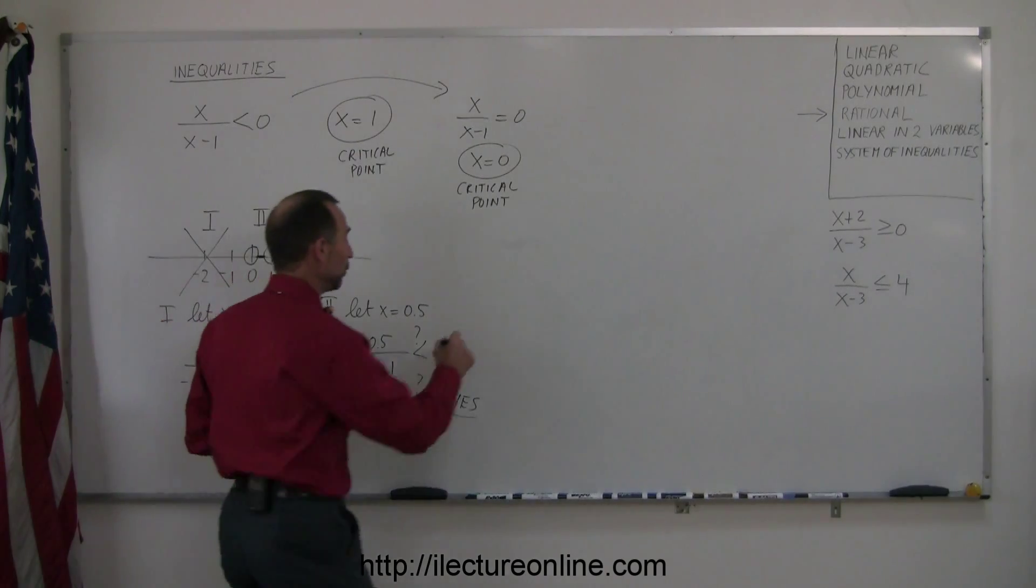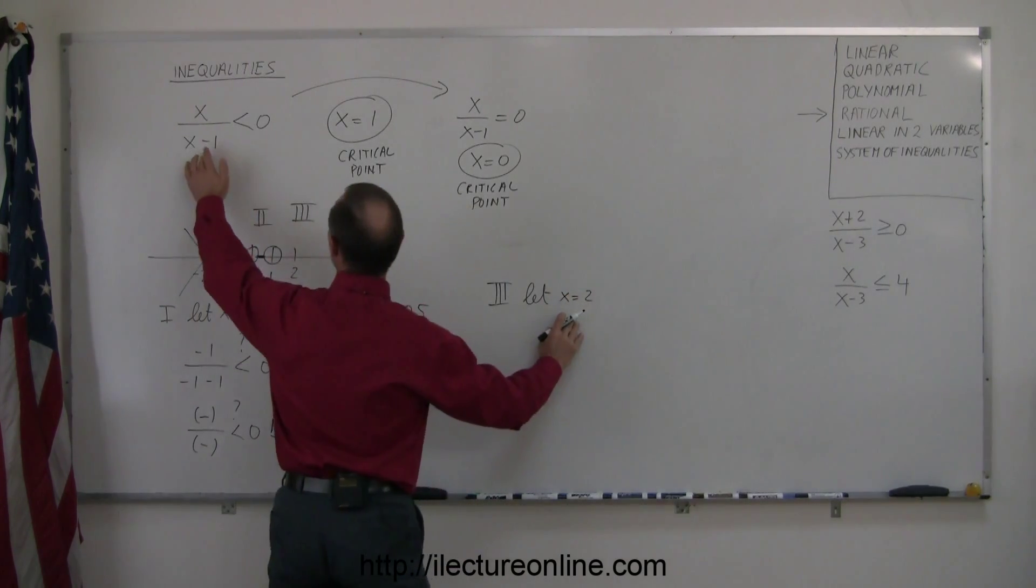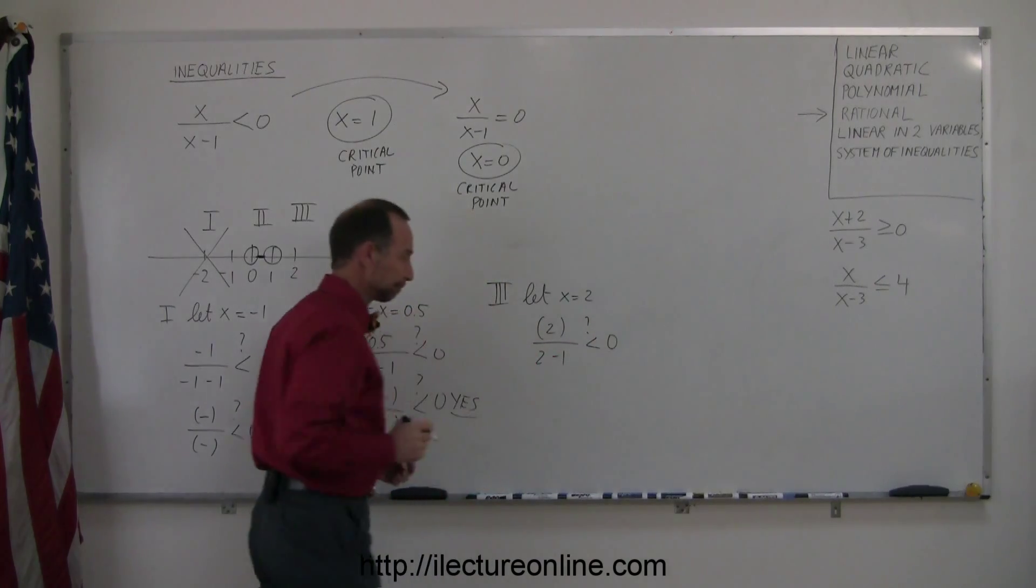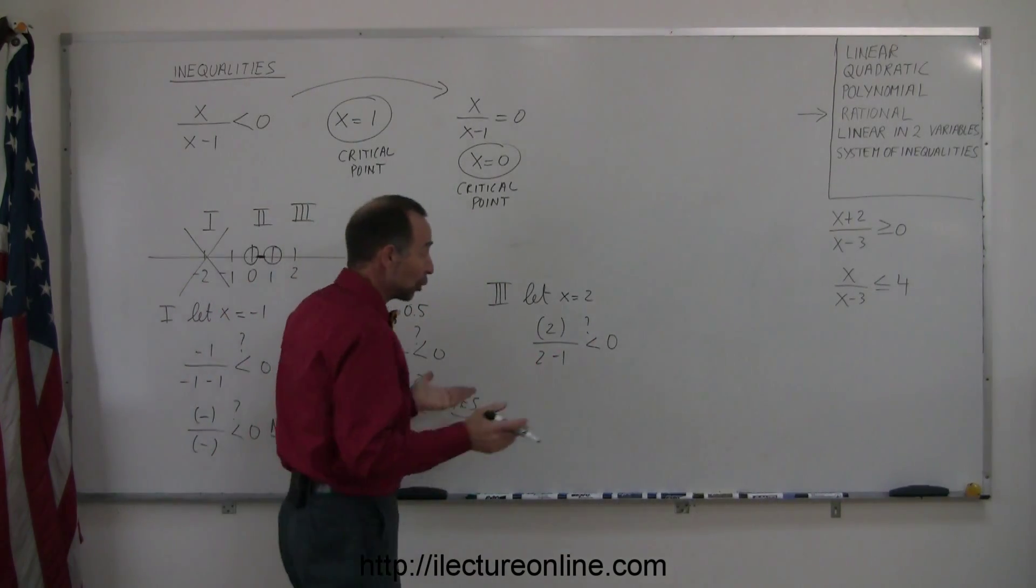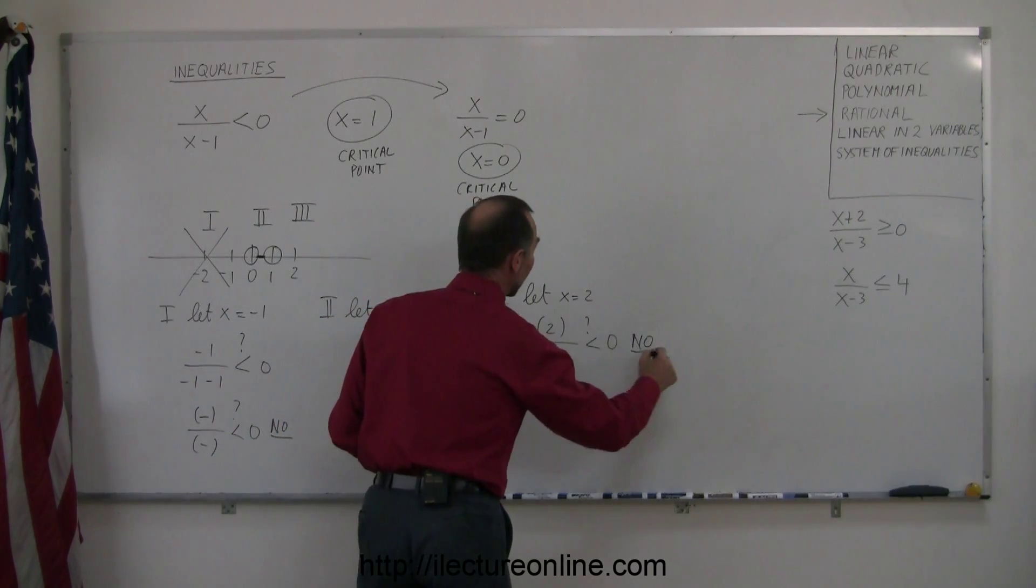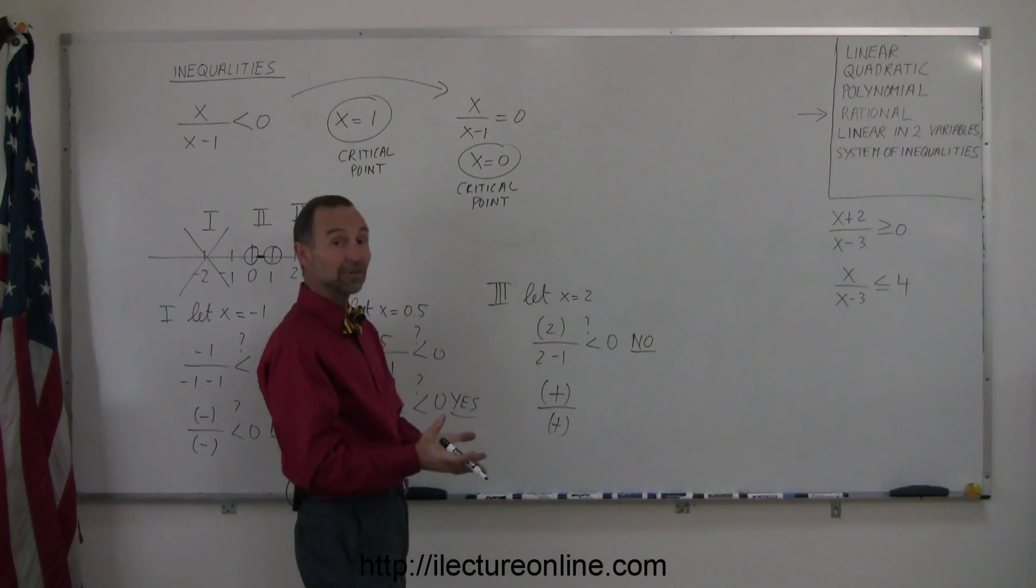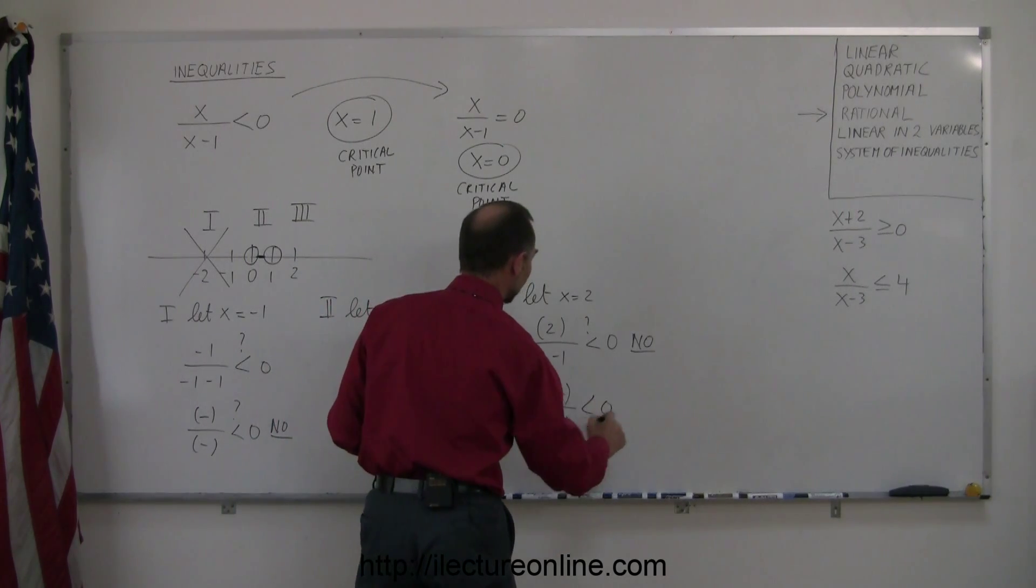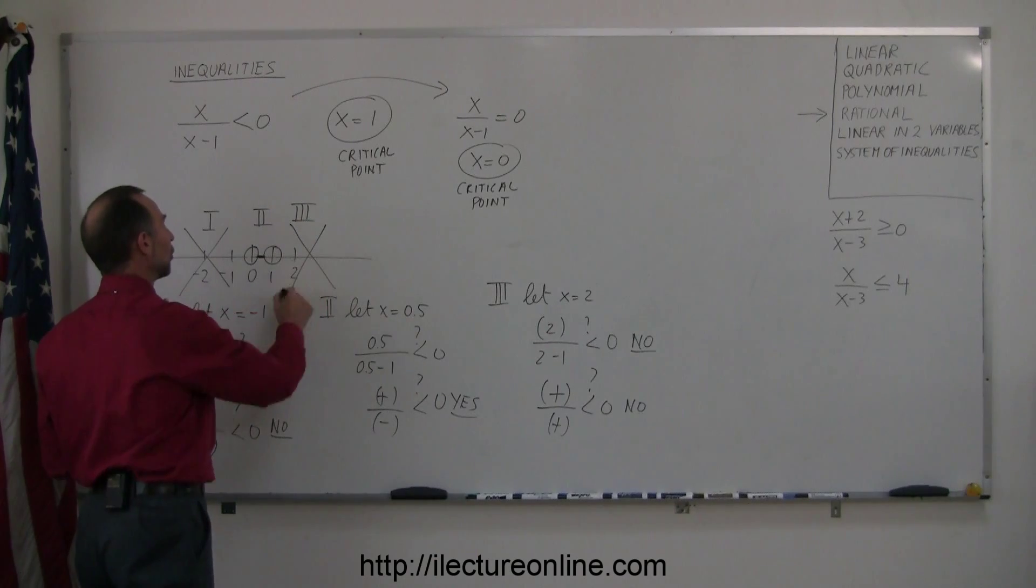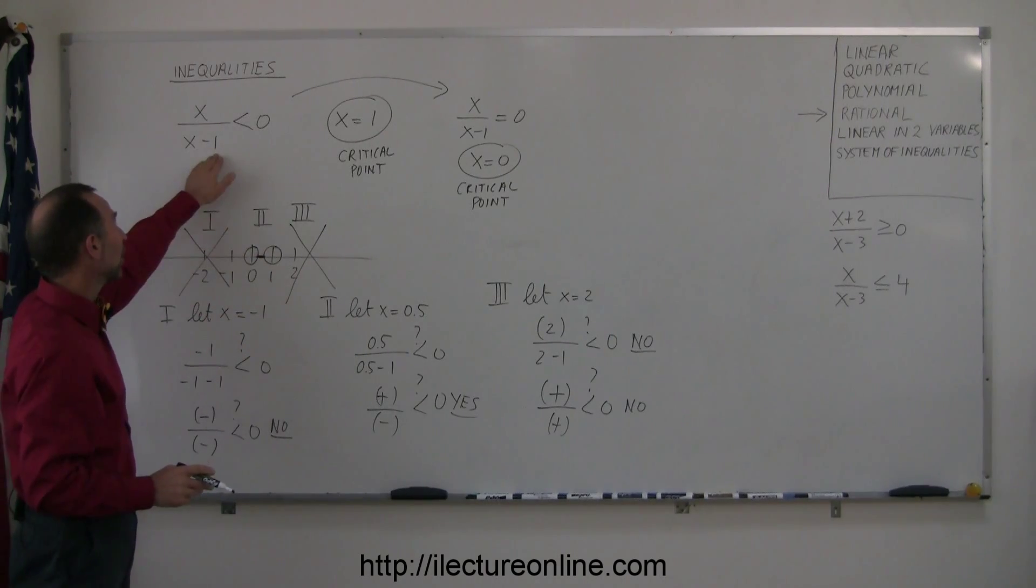One more region to check out. Region number 3. For that, we pick a point to the right of 1, like the number 2, let x equals 2, and we plug that into our inequality. So we get 2 divided by 2 minus 1, and the question is, is that less than 0? Well, you don't have to work it out, although you could. It's pretty simple. You say 2 divided by 2 minus 1 is 1. 2 divided by 1, is that less than 0? The answer is no. Or you could also say that the numerator is positive, and the denominator is a positive number. And when I divide a positive by a positive, I get a positive number, and a positive cannot be less than 0. So either way, you realize x equals 2 is in a region that does not belong to the solution, so you can get rid of that, which means that all the numbers between 0 and 1, not including the endpoints, will satisfy this inequality.